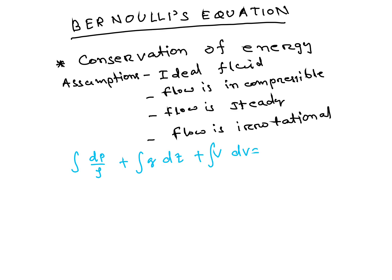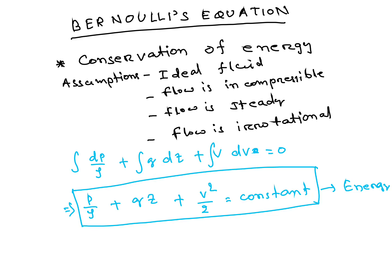Here we will get Bernoulli's Equation. P/ρ + v²/2 + gz = Constant. This is in terms of energy. In terms of pressure head, it's P/ρg + z + v²/2g = Constant. Both are important. Sometimes they may ask numerical also; you have to use this formula or this formula.